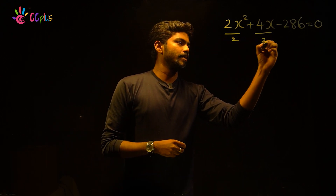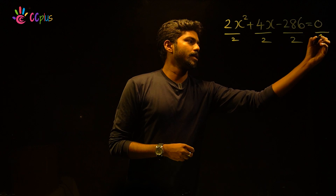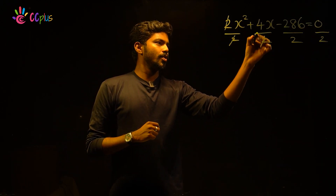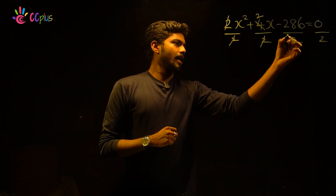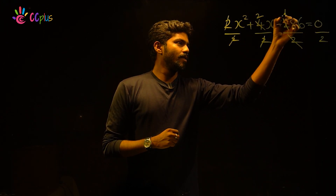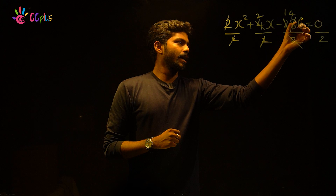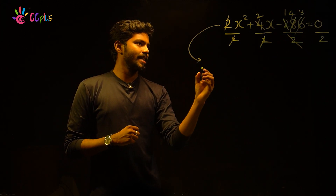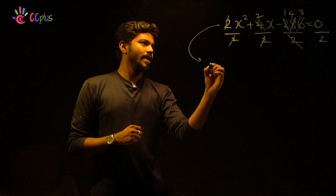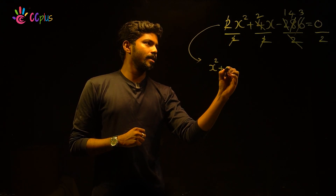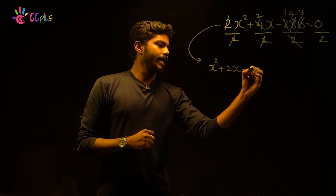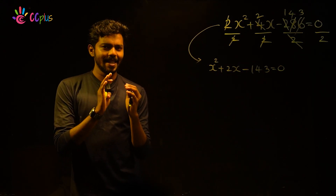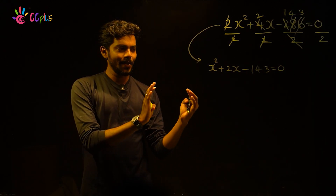Dividing everything by 2: 2x² divided by 2 is x², 4x divided by 2 is 2x, and 286 divided by 2 is 143. So our reduced equation is: x squared plus 2x minus 143 equals 0.